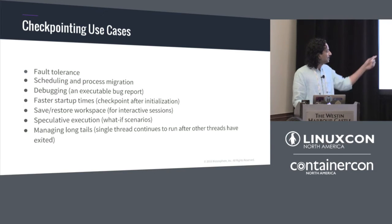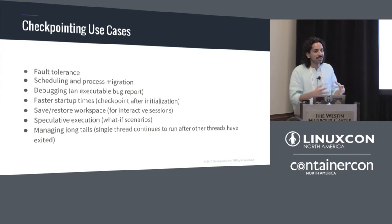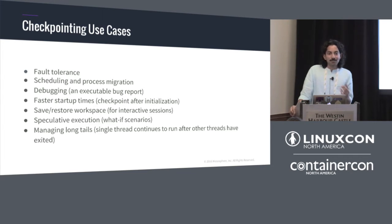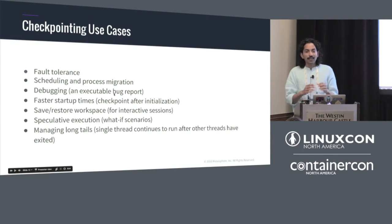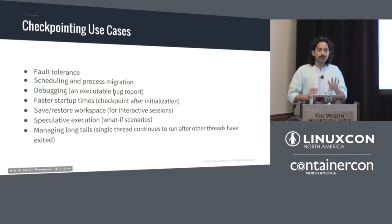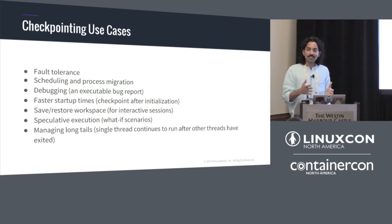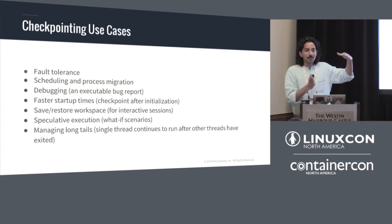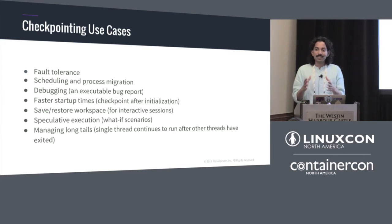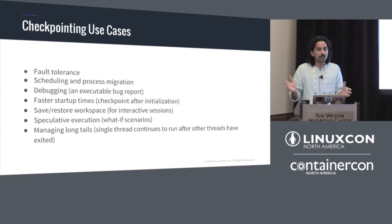Speculative execution and managing long tails is another use case. Consider a 16-threaded application running for 12-16 hours where 15 threads have finished but one thread still needs four more hours for post-processing. In most cases, those 15 remaining cores are wasted because you claimed resources for the entire application. You can optimize by moving 16 such processes onto a single node so each thread consumes one core, freeing 15 nodes for other work.